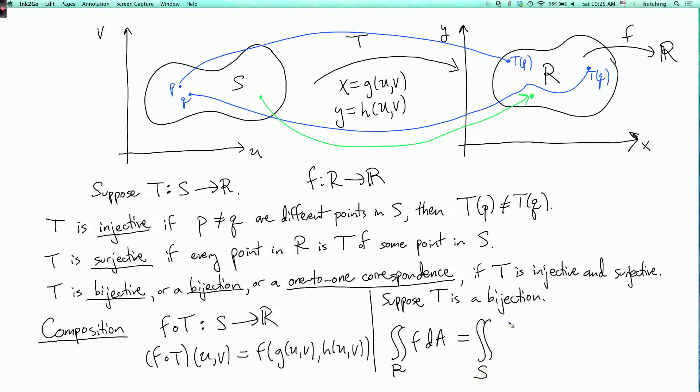So I could look at the region S. And then I'm going to have the function F composed with T. So this is what the function corresponds to on S. And then I'm going to need something else here. And this is what we want to figure out. So how do I rewrite my integral over R as an integral over S? What do I need to put in the integral?